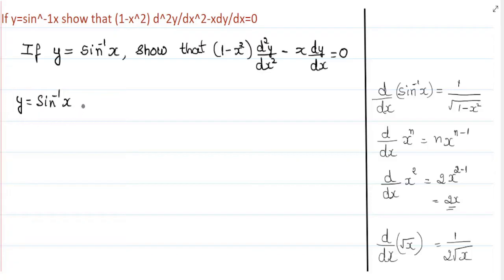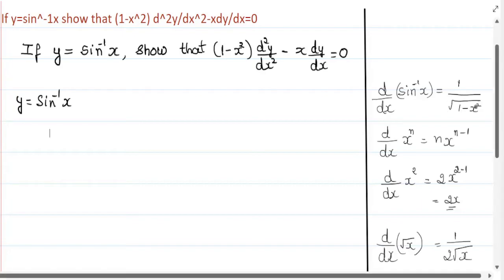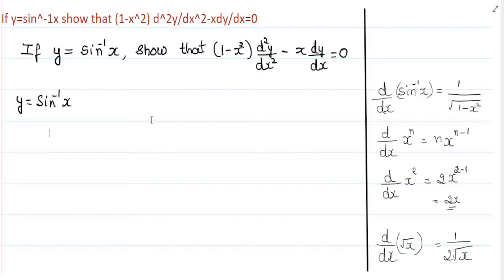First, we need to differentiate this equation with respect to x. For that, we need to know the derivative of sin inverse of x. The derivative of sin inverse of x — d by dx of sin inverse of x — is 1 by root of 1 minus x squared. So, dy by dx is equal to 1 by root of 1 minus x squared.